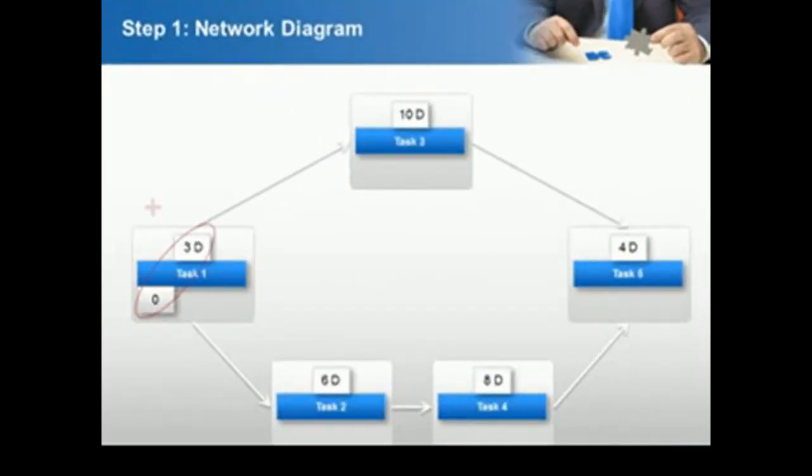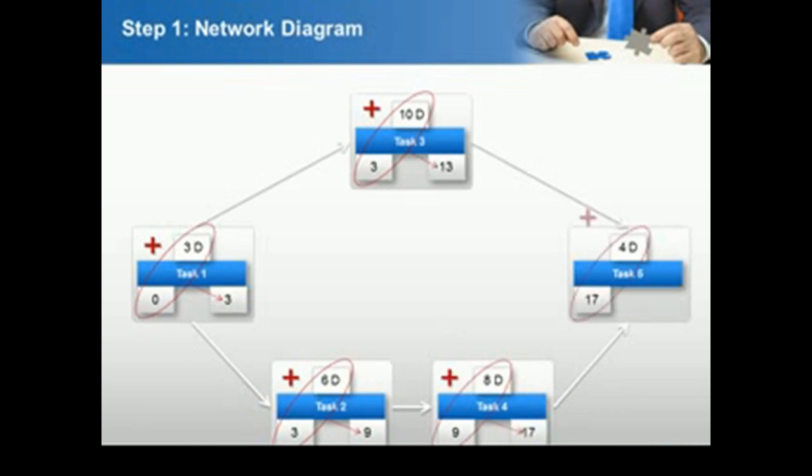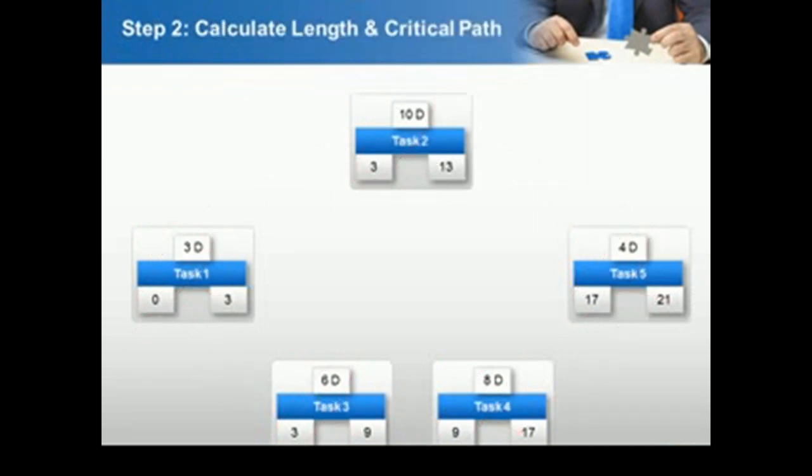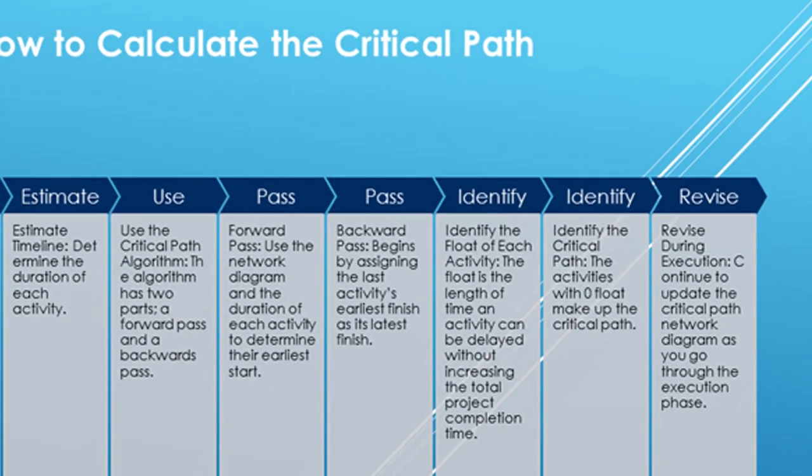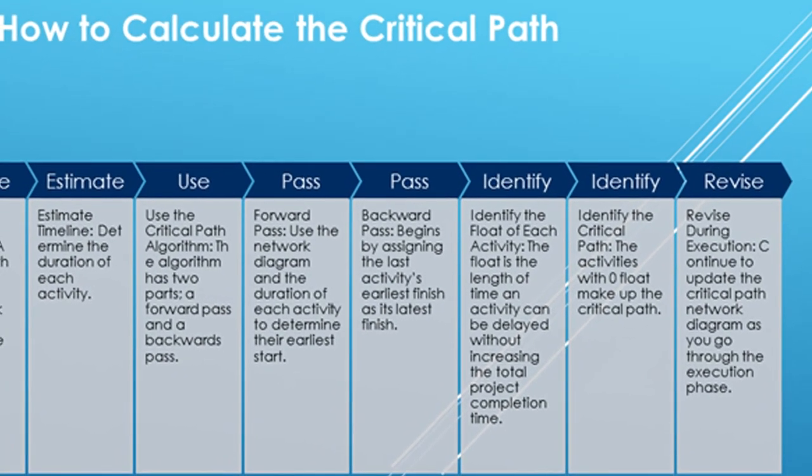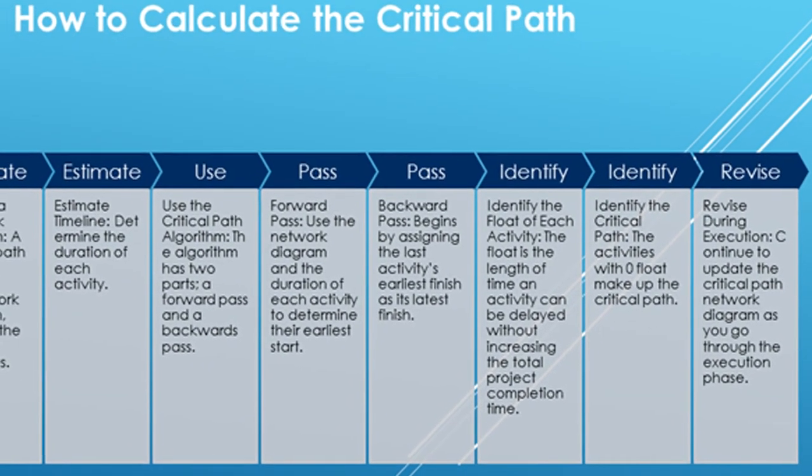The critical path method or CPM and the program evaluation review technique or PERT are both visual representations of a project schedule, but it's important to know the differences. The main difference between PERT and CPM is that PERT was designed to plan projects with uncertain activity times. Therefore, PERT uses three time estimates for each task: optimistic, most likely, and pessimistic. On the other hand, CPM was designed for projects where activity times are certain.